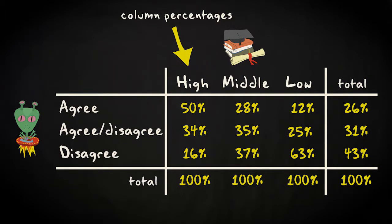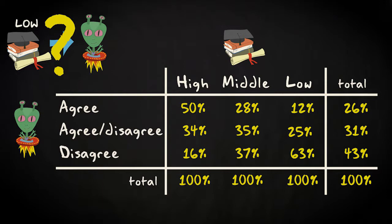What do these percentages show us? Are people with a lower education more inclined to believe in extraterrestrial life?